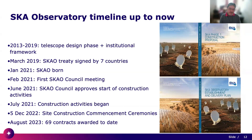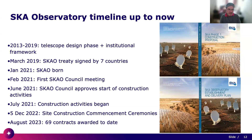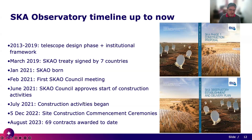The timeline of the observatory: it started in 2013 with the telescope design and institutional framework. In 2019 a treaty was signed by seven countries. In 2021 the organization was born, and in February 2021 the first council meeting took place. In June 2021 the council approved the start of construction, which began in July. In December 2022 the site construction commencement ceremonies took place. Last year 79 contracts were awarded, and this number is increasing.